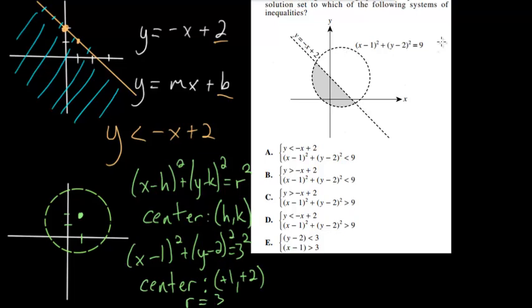So now going back up to our problem here, we can see that this region is underneath the line. So we already know that part of our solution would be y < -x + 2. And we can also see that our region here is within the circle, so it would also have to be less than 9 here. So for both of our equations, we are dealing with the less than versions of it. So going through our possible choices here, you can see that choice letter A is the correct option.